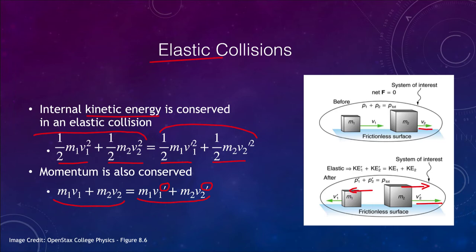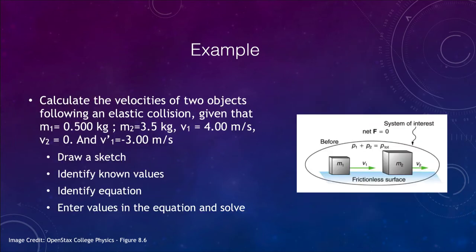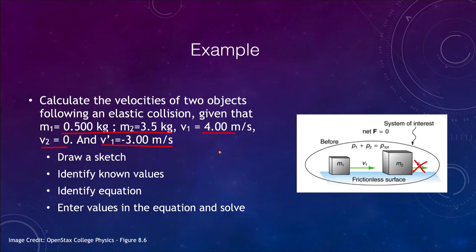Let's look at an example of an elastic collision where we calculate the velocities of objects after the collision. We know the masses — 0.5 kg and 3.5 kg — and the initial velocities: V1 is 4 m/s and V2 is 0, meaning the second object was not moving. We also know that V1 after the collision is negative 3 m/s, meaning object one moves to the left after the collision. Recall that velocity is a vector, so the sign indicates direction.